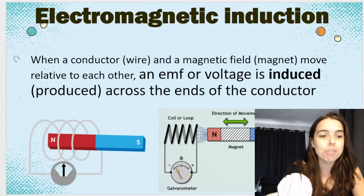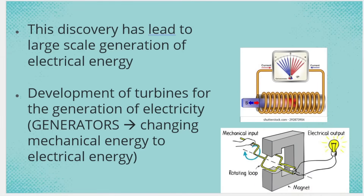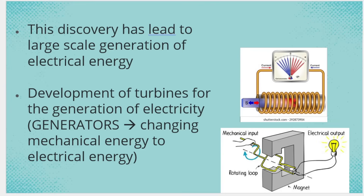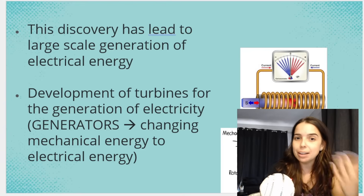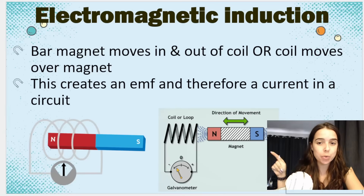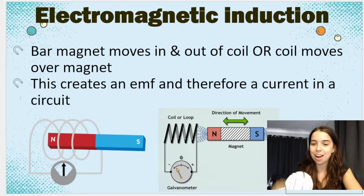This is called electromagnetic induction, and its discovery has been really amazing because it has resulted in the large-scale generation of electrical energy and the development of turbines and generators. In a generator, we rotate the coil — you can see there's an arm rotating the coil — so we are moving the conductor relative to the magnet, causing electromagnetic induction and an electrical current to flow. We have essentially converted mechanical energy, the rotating of the coil, into electrical energy. We move the bar magnet in or out of the coil, or we move the coil over the magnet, and this creates an EMF and therefore current.